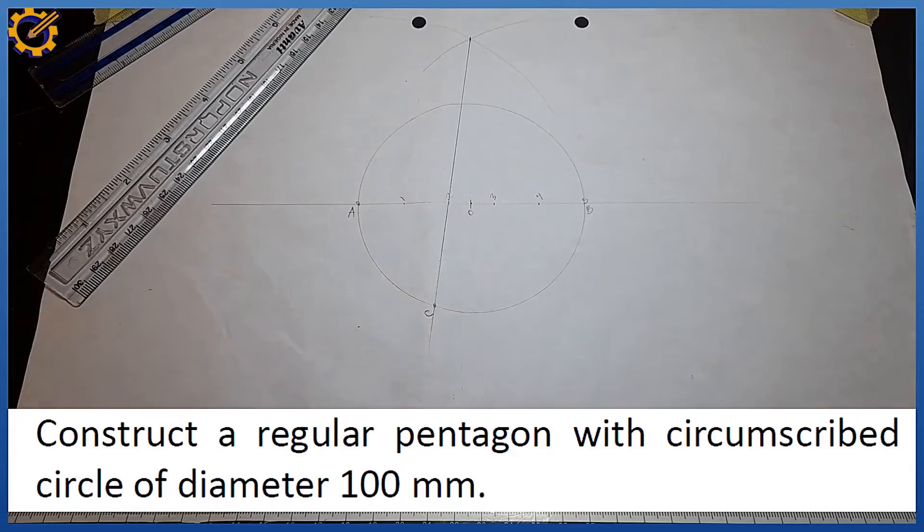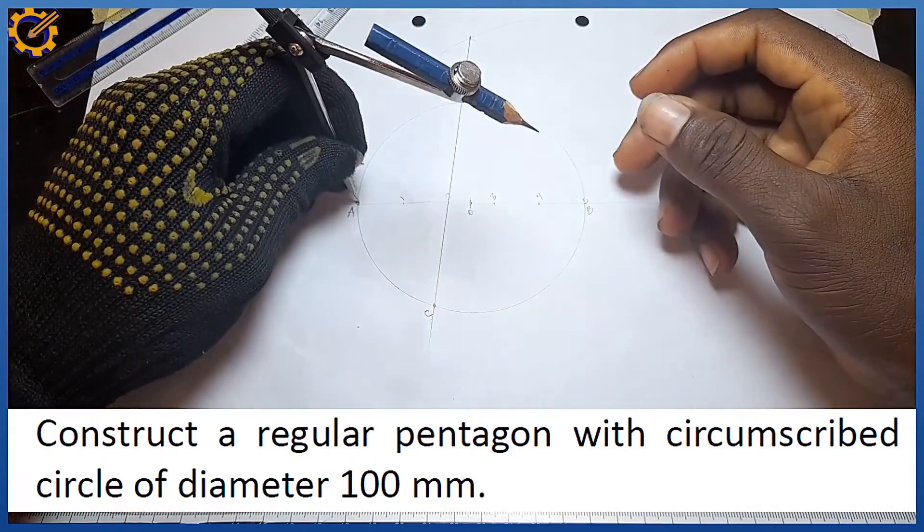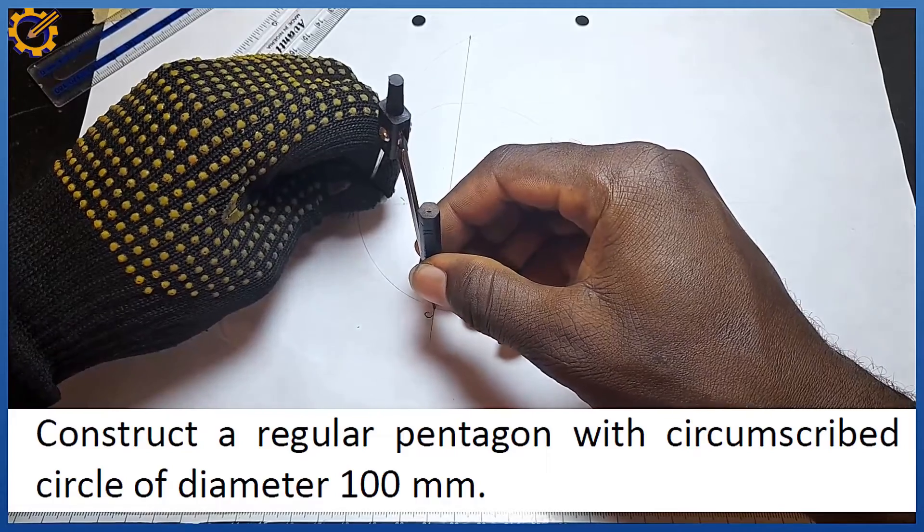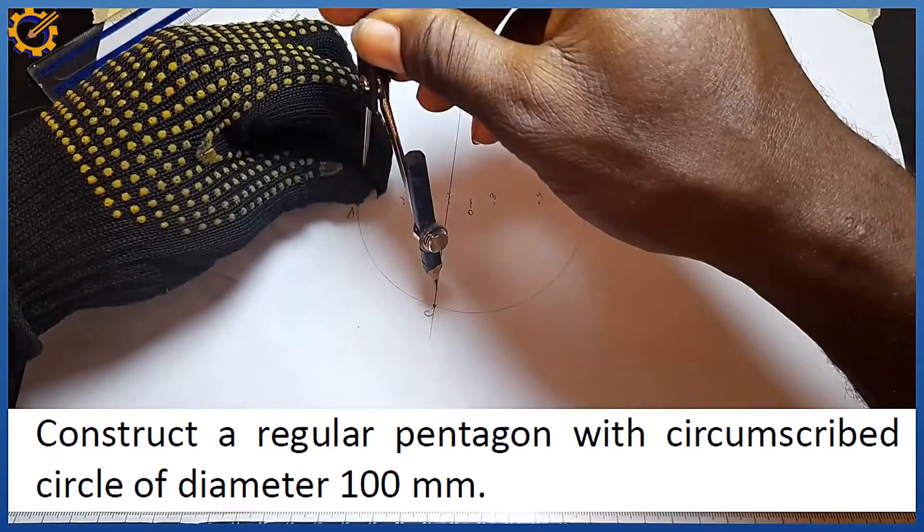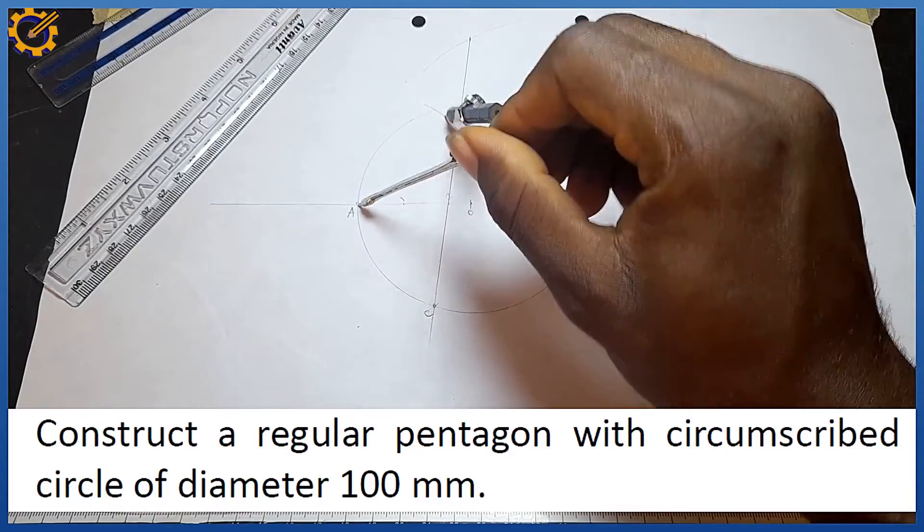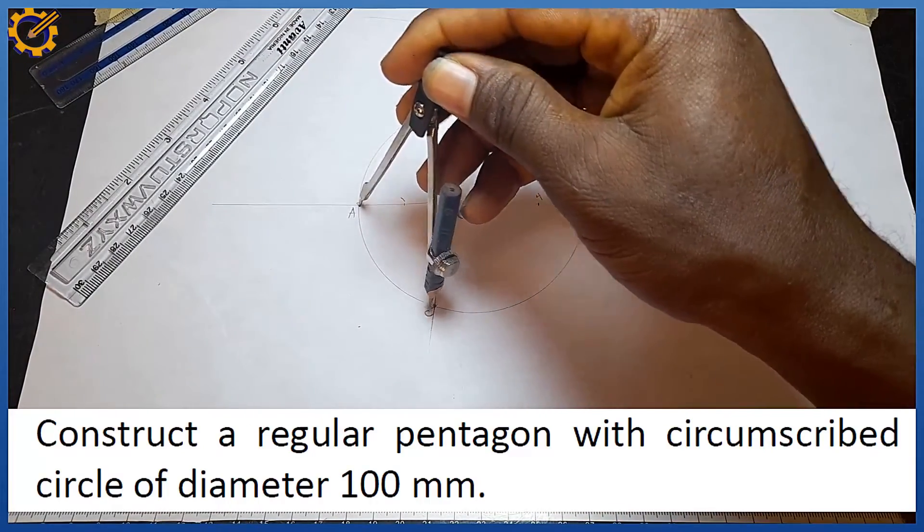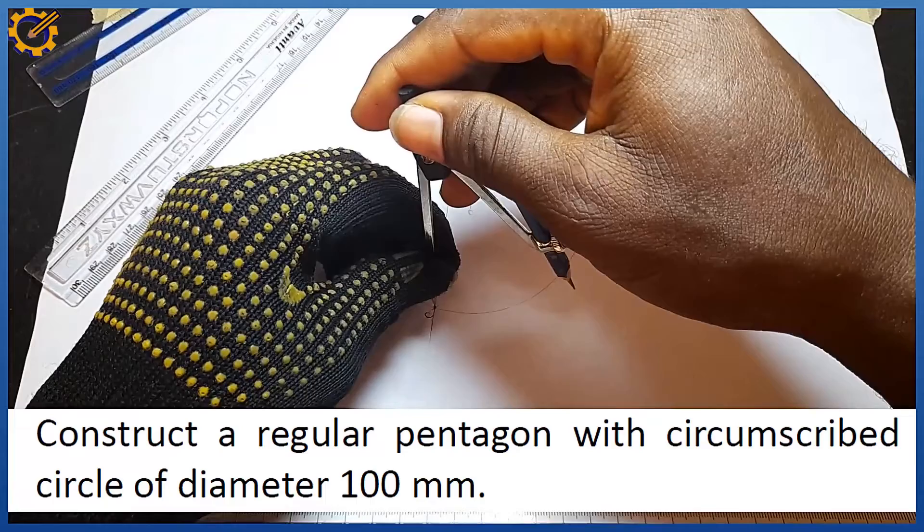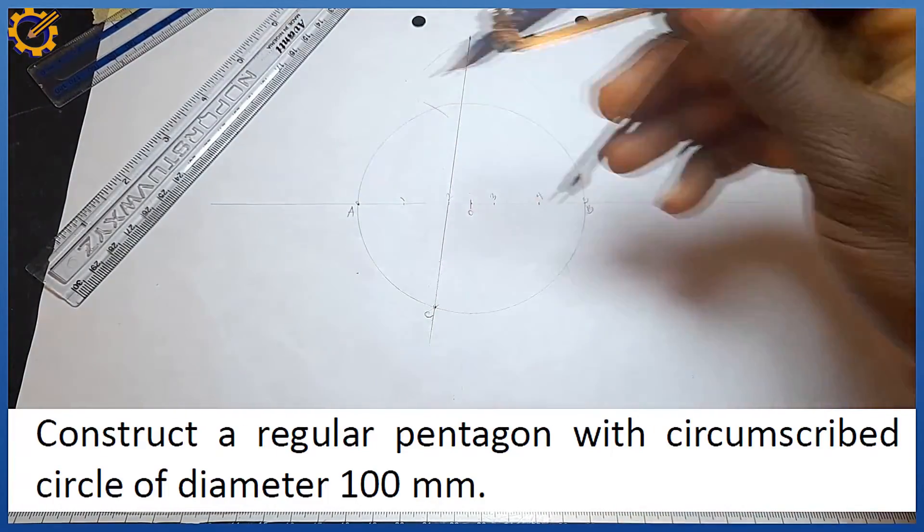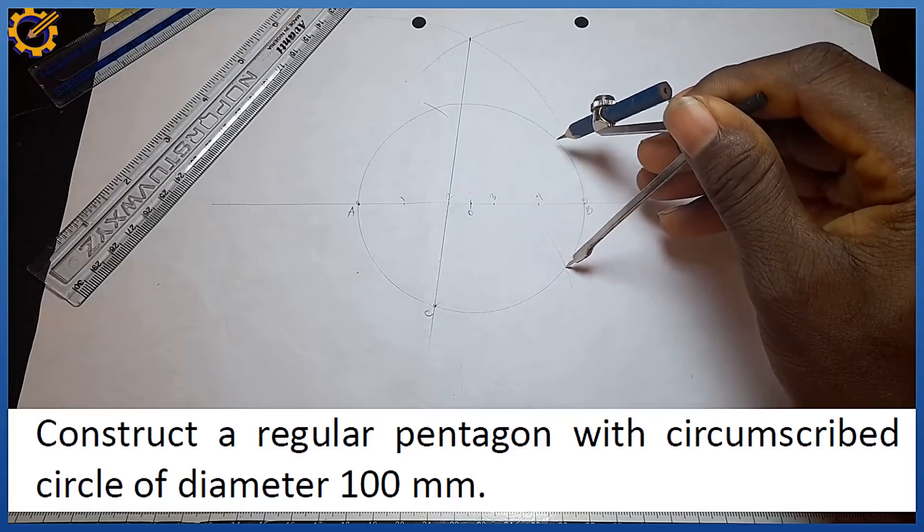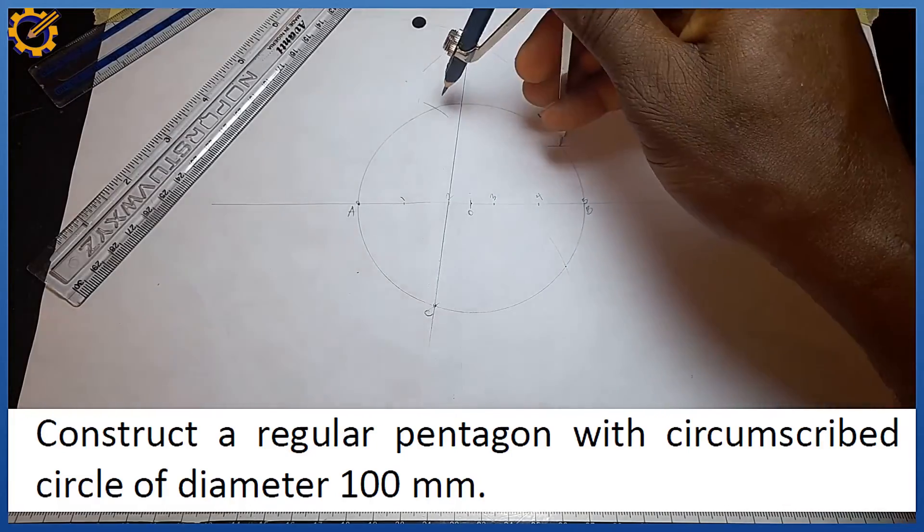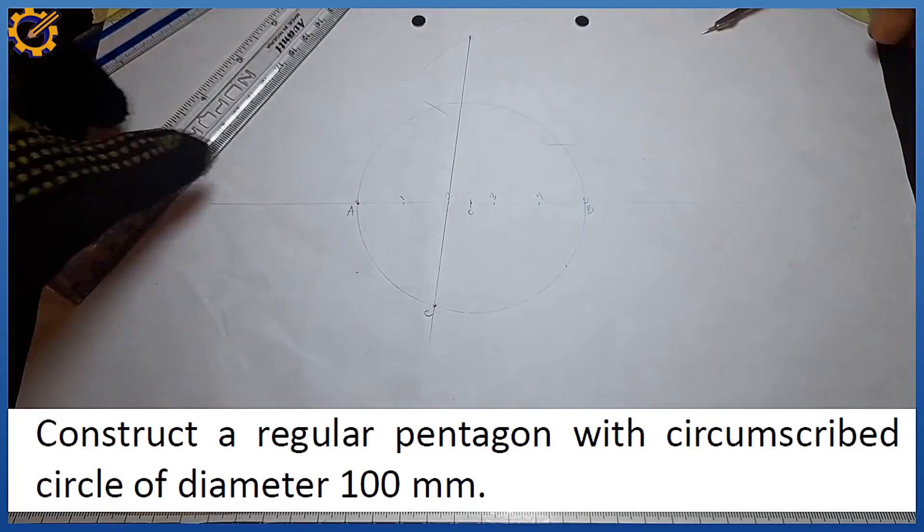This is distance AC. Step it off on the circle. From A, I step this off here. Then from C also, I step this off. Do you see that? Then from this junction with that same length, I step this off. If you follow me, you can see the intersections right there. The next procedure is to pick my ruler and join the points all together.